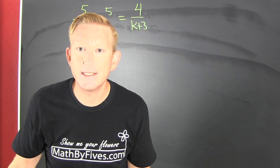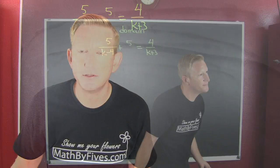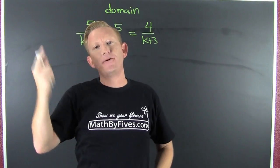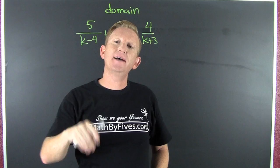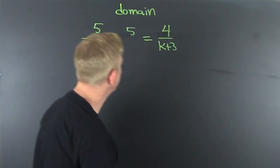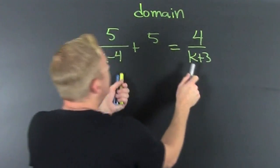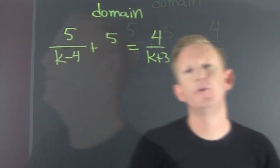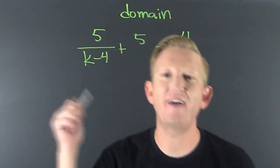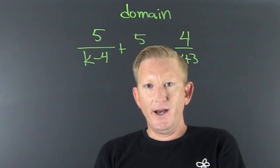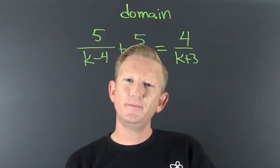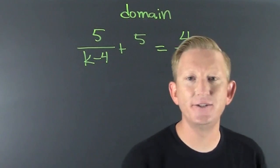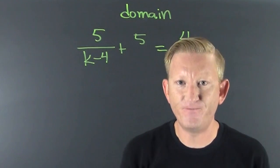I've heard from the people on the internet that I need an introductory example to domain for a rational equation. What do you need this for? We're trying to find the values of k that violate the domain — not like .com or .gov domains. The domain of a function.